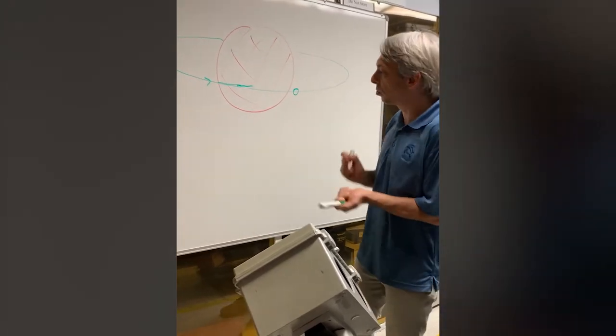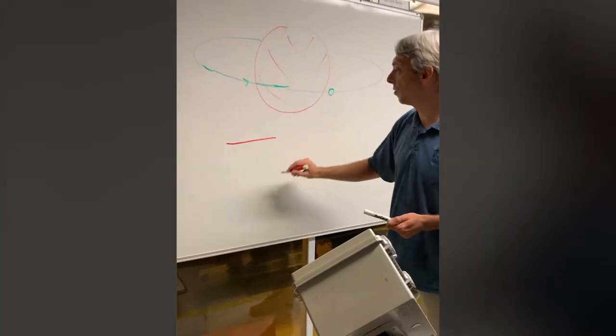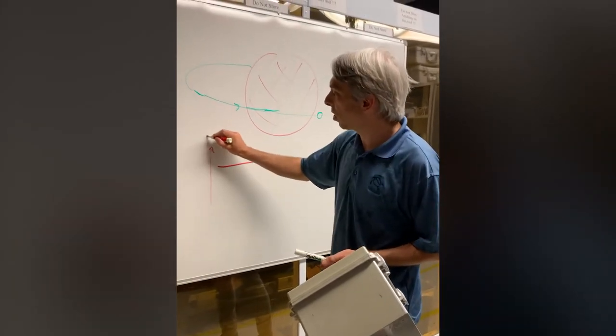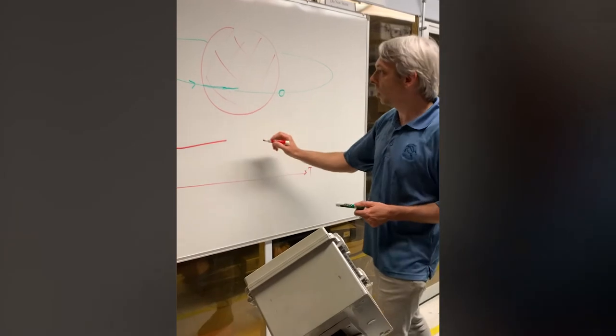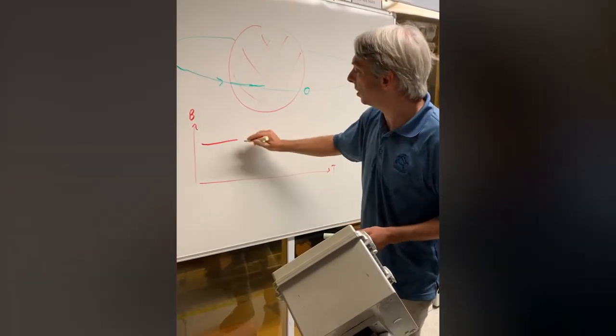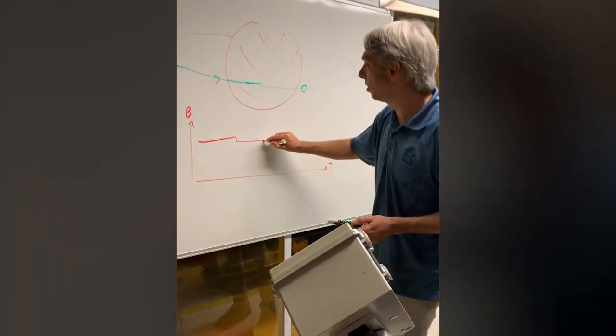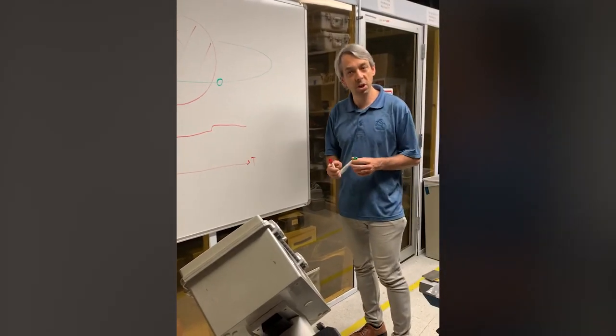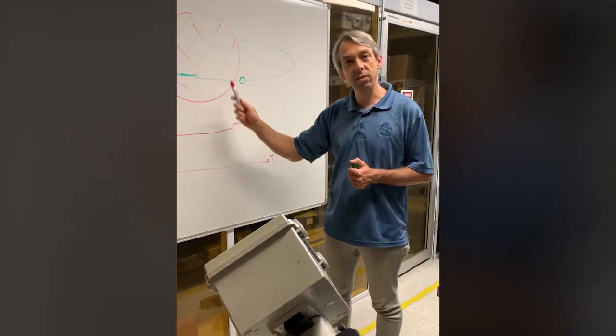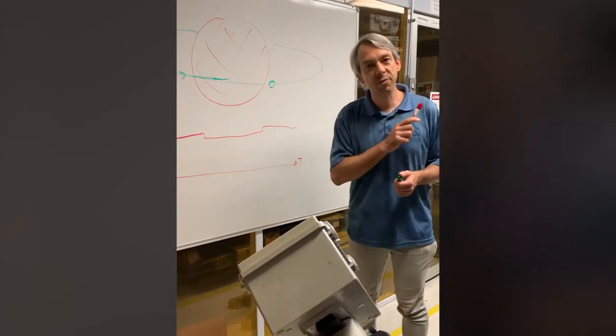So if we were to actually look at how bright is the star as a function of time. This is how bright the star is. This is time. What we would see is basically a little dip in flux and then it comes back up. So the easiest way to find a planet is to look for that. It's to look for a star getting a little bit fainter.